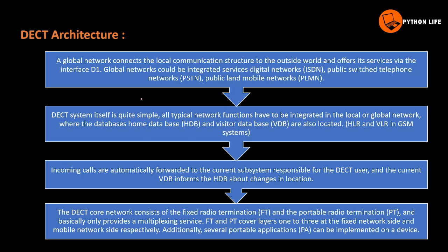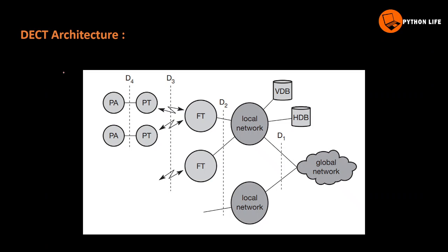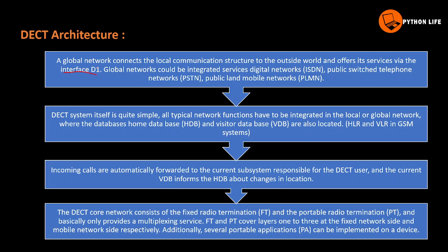This is the DECT architecture. A global network connects the local communication structure to the outside world and offers its services via interfaces D1, D2, D3, and D4.